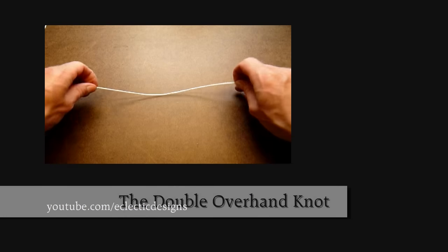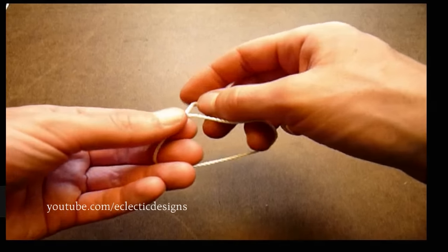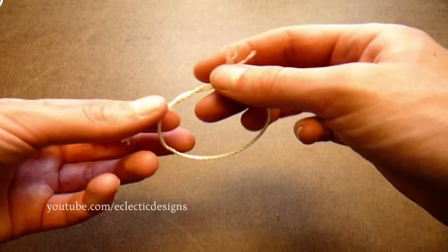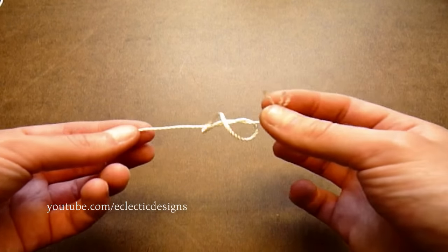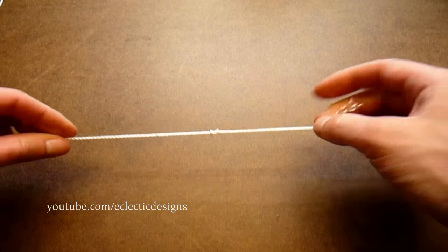The double overhand knot. Make a basic overhand knot by making a loop and passing one end of the string through the loop. This time, pass the end of the string through the loop again. Pull both ends to tighten.